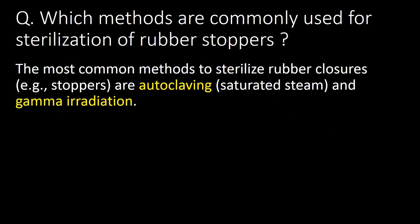Which methods are commonly used for sterilization of rubber stoppers? The most common methods to sterilize rubber closures or stoppers are autoclaving — that is, by using saturated steam — and the second is gamma irradiation.